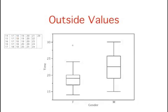An outside value is defined as a value beyond the inner fence, but not beyond the outer fence. For the women, the upper inner fence is 24.5 and the upper outer fence is 29. Notice that there is one value that meets this criterion, 29. This value of 29 is therefore an outside value. Outside values are indicated by small o's.